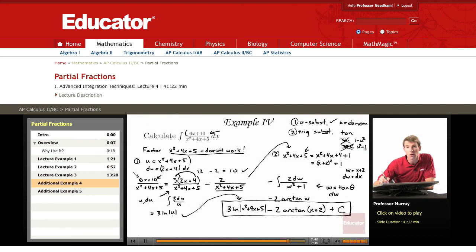Now, either one of those can be factored. u squared minus 1 factors as u minus 1 times u plus 1. Similarly, 1 minus u squared factors as 1 minus u times 1 plus u.